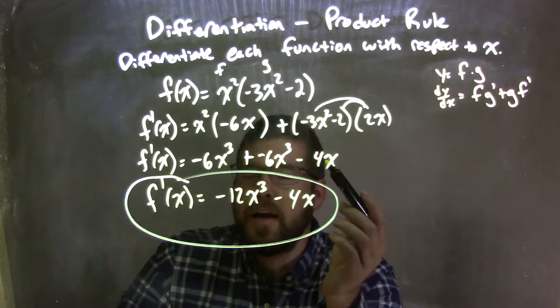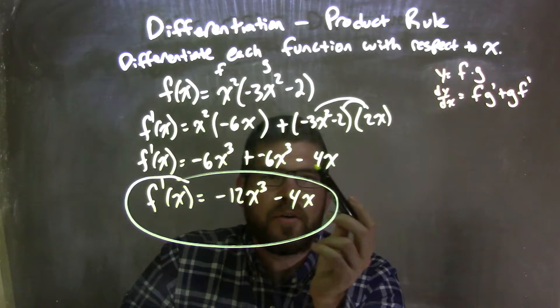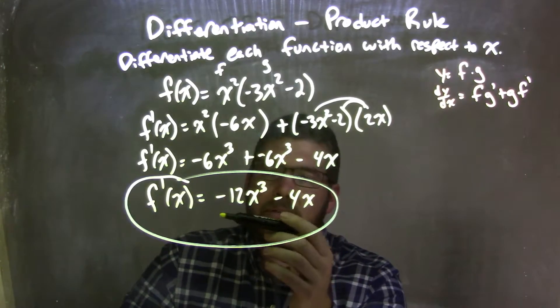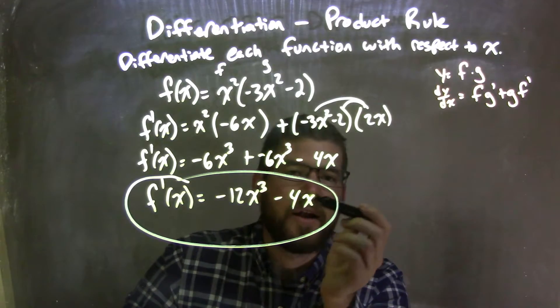Then I simplify, and in simplification, I notice we have negative 6x to the third, plus negative 6x to the third, minus 4x, like terms there. So I combine them to give me my final answer, which is f prime of x is equal to negative 12x to the third, minus 4.